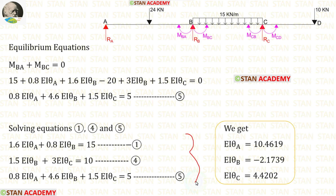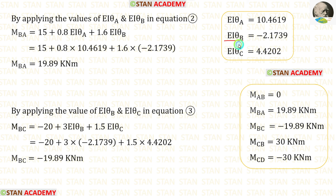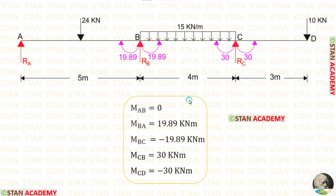Now we have 3 equilibrium equations. We can solve these in a calculator to get the answers. If you do not know how to solve 3 equations using a calculator, see the link in the description below. By applying the values of EI·theta_A and EI·theta_B into equation 2 we get MBA, and applying EI·theta_B and EI·theta_C into equation 3 we get MBC. So all moments have been calculated.